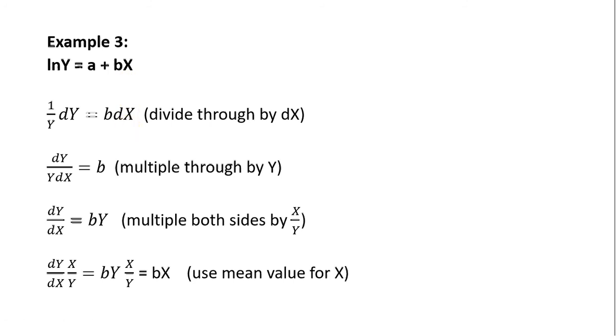Let's divide everything through by the change in x or dx. So doing that, we're left with this result. Now let's multiply everything through by y. So the derivative of y with respect to x, given this functional form, is just b times y.